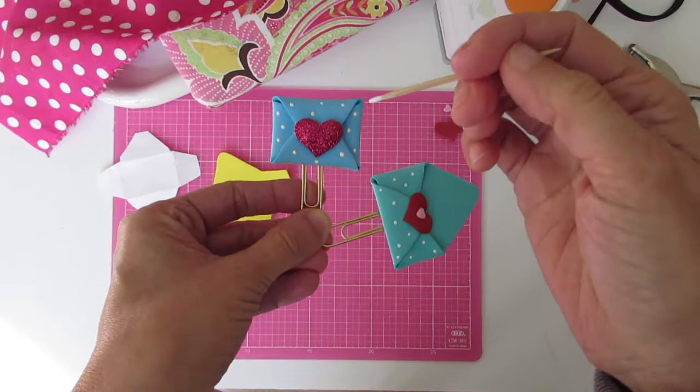To add polka dots all I did was grab the toothpick and with acrylic paint just paint it over the envelope.